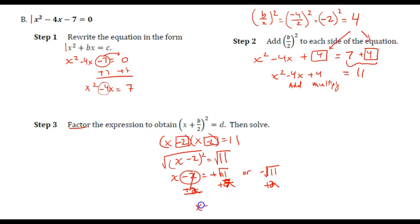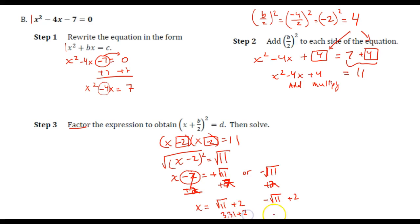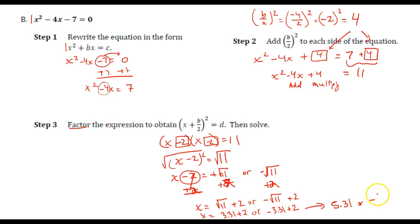The 2s cancel out, and I have x equals square root of 11 plus 2 or negative square root of 11 plus 2. In your calculator, go ahead and figure out what the square root of 11 is — I found that to be about 3.31 and negative 3.31. Working each one out, that would be 5.31 or negative 1.31.